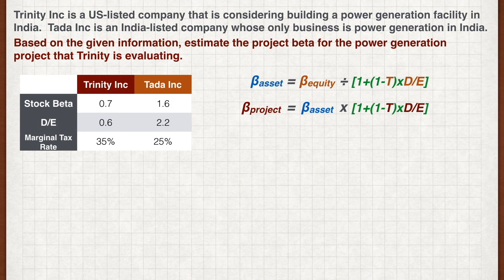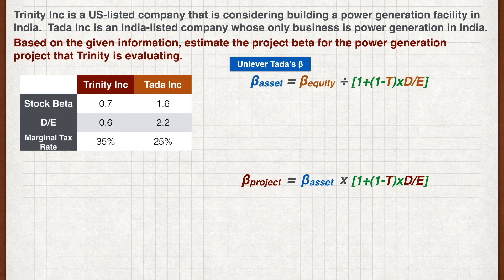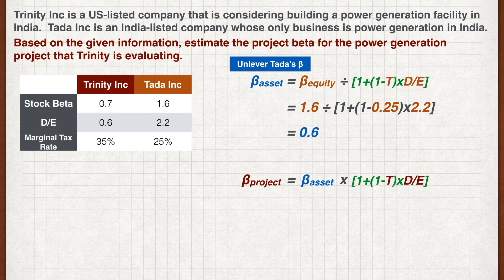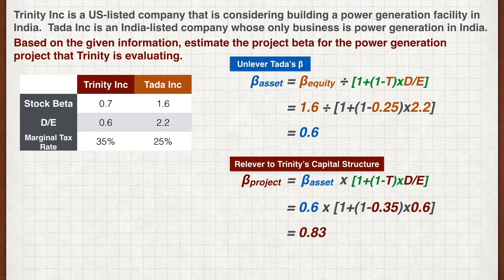And we're back. The main challenge for the pure play method is to determine which figures to use at which stage. The first stage is to unlever Tadar's stock beta — all figures used are from Tadar. Plug Tadar's stock beta, marginal tax rate, and debt-to-equity ratio into the formula and we get a deleveraged beta of 0.6. Note that at this stage we divide by the leverage factor. The next stage is to relever the beta to Trinity's capital structure, so we use Trinity's figures. Plug Trinity's marginal tax rate and debt-to-equity ratio into the formula and we get the project beta of 0.83. Note that at this stage we multiply the leverage factor.